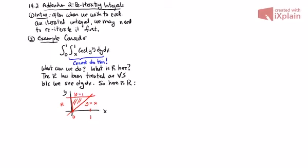This is our r. This lower function is y equals x. The upper function is y equals 1. That's the r. So the question I want to ask is, well, what would happen if we did this as horizontally simple instead? What if we treated this as horizontally simple?